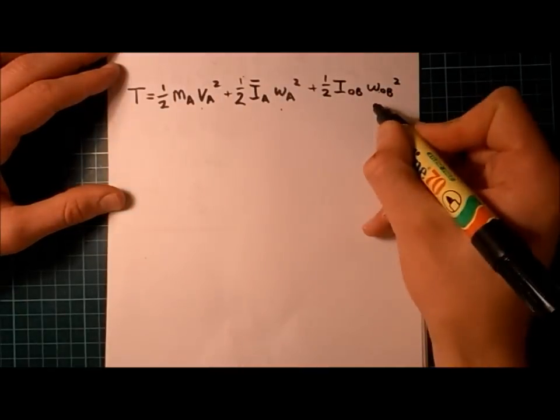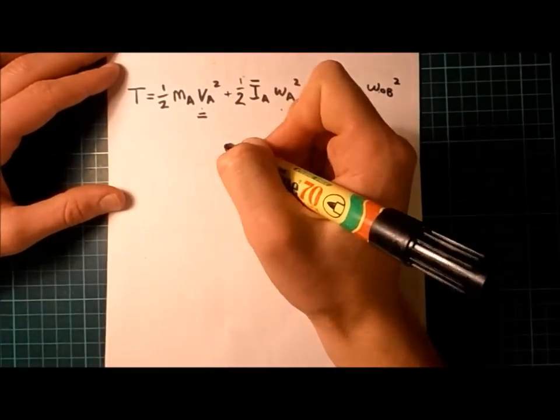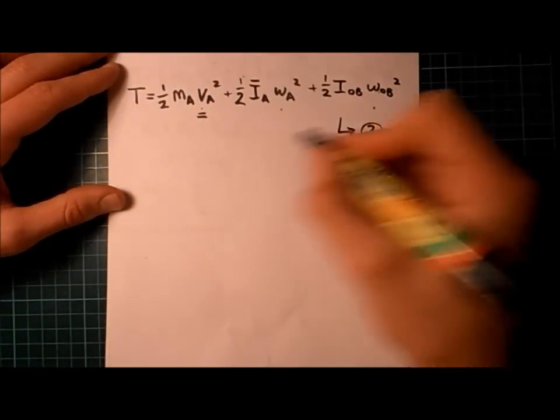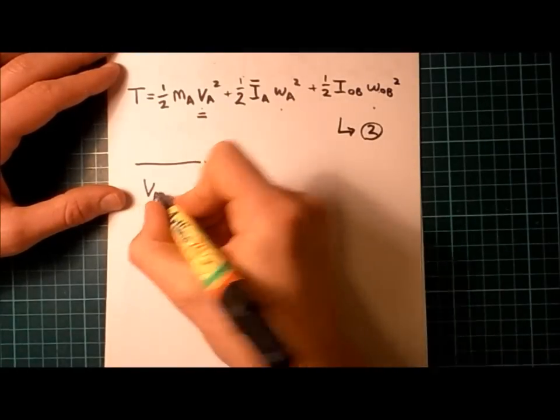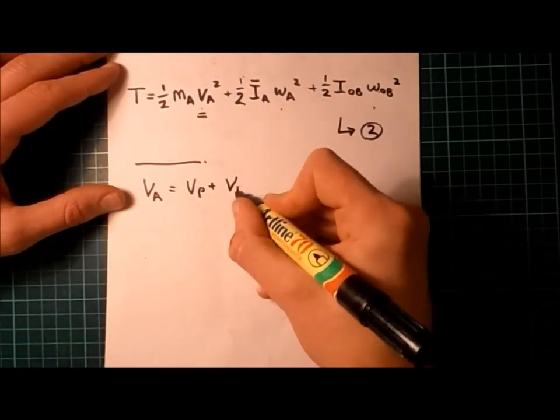However, we have a problem. At the moment, our kinetic energy is in terms of V A, omega A, and omega OB. Ultimately, we want to get them all in terms of V A, which is also x dot.